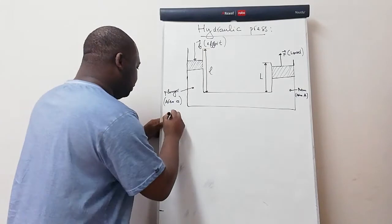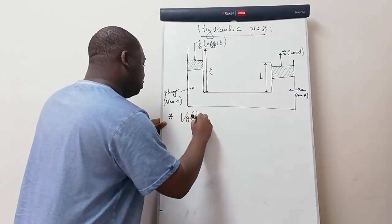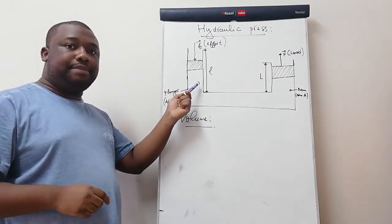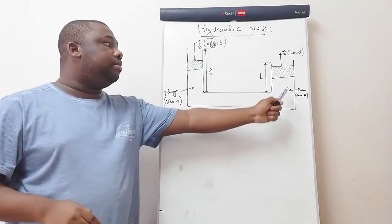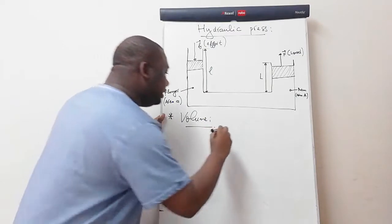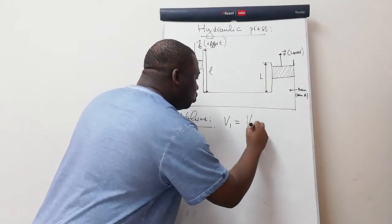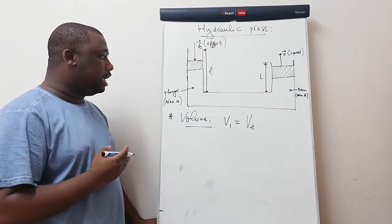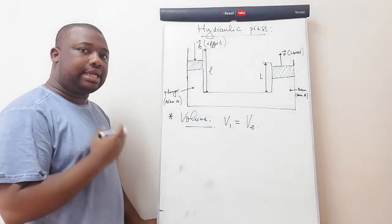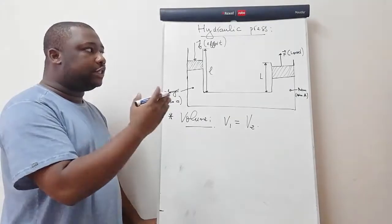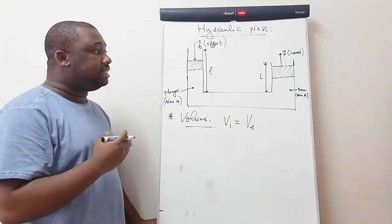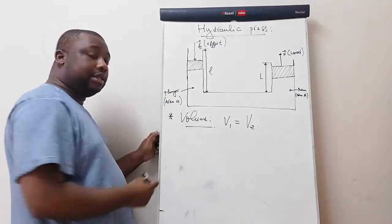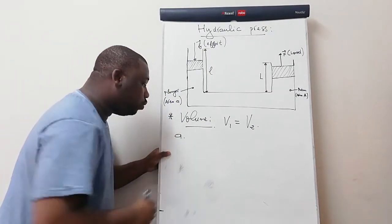For volume, the rule is: the volume displaced by the plunger equals the volume received by the ram, so V1 = V2. To find the volume on the plunger, multiply the area of the plunger by the stroke length of the plunger. To find the volume on the ram, multiply the cross-sectional area of the ram by the stroke length of the ram.